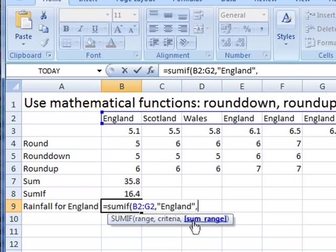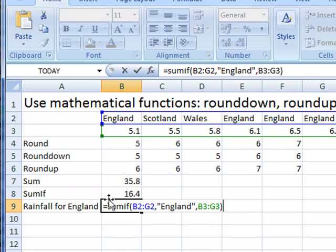This is where the sum range comes in. So I need my comma. What is the sum range? This is the range that we want to add up. The sum range. Close brackets. So let's read that. Some add up if the contents of cell B2 to G2, if they are England, then add up the numbers. Press the enter key.